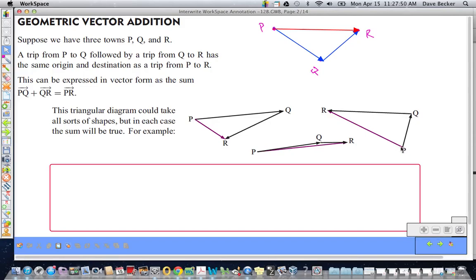P to Q, Q to R, the result is PR. It doesn't matter where P, Q, and R are located. The results would be the same.